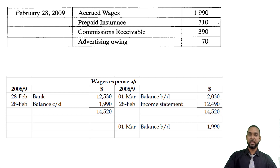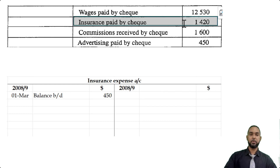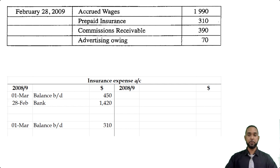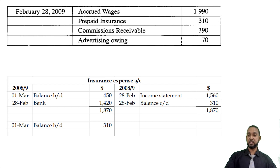Now let's look at the insurance expense account. The opening balance is prepaid insurance — $450. A prepaid expense is an asset, so assets have debit balances — it goes on the debit side. Insurance paid by check — $1,420 — also goes on the debit side. The closing balance is still prepaid at $310, brought down on the debit side. The total on the debit side is $1,870; subtract the $310 closing balance and the balancing figure — the income statement figure — is $1,560, the insurance expense incurred for the period.